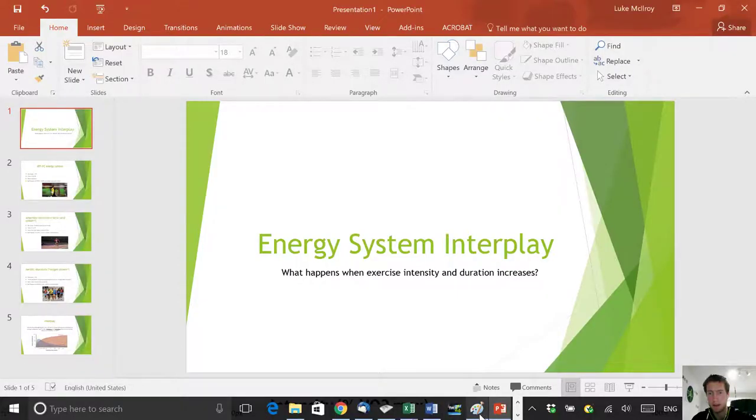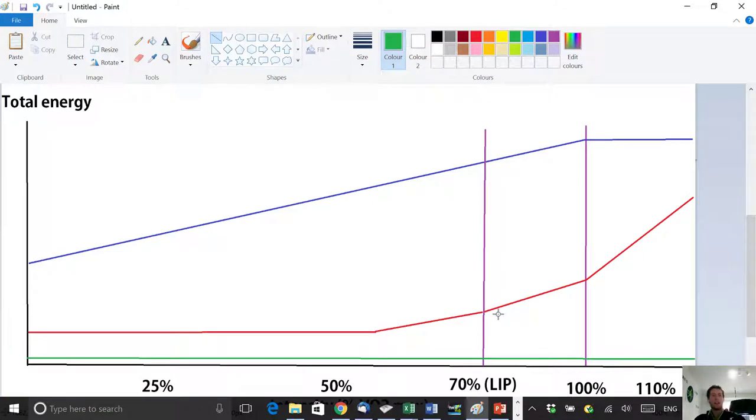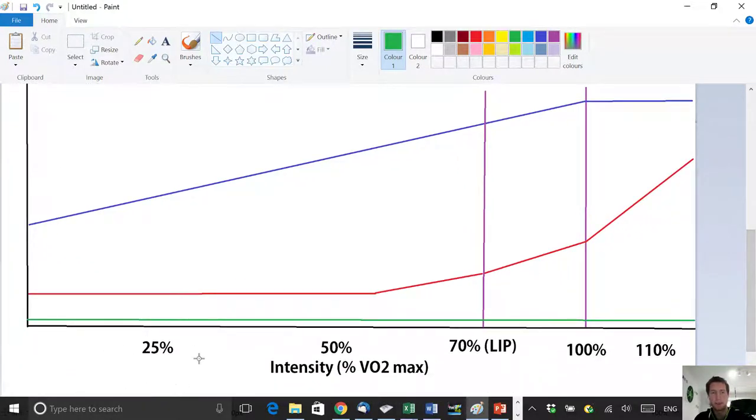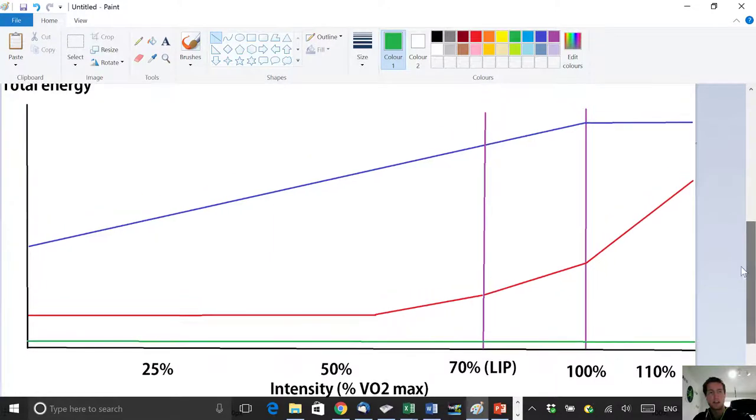Have a look at this - this is total energy (not as a percentage) on the left, and percentage of VO2 max intensity at the bottom. So 25%, 50%, 70% which is most people's lactate inflection point - that's their anaerobic threshold, lactate threshold, functional threshold power, they all mean the same thing. That's around 70% for the average individual. Then we've got 100% VO2 max, and we can actually go above 100%, so let's just put 110% here. Let's assume we're an hour into a race.